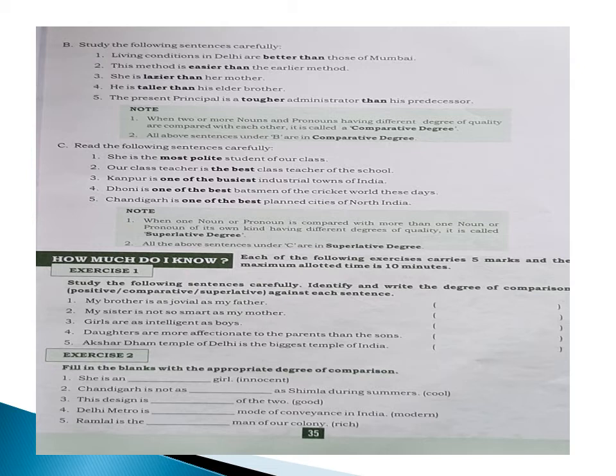Let us see exercise number one: study the following sentences carefully and identify and write the degree of comparison — positive, comparative, or superlative. Fourth sentence: 'My brother is as jovial as my father' — this is positive degree. 'Daughters are more affectionate to the parents than the son' — 'more affectionate' is comparative degree. 'Akshardham Temple of Delhi is the biggest temple of India' — this is superlative degree.